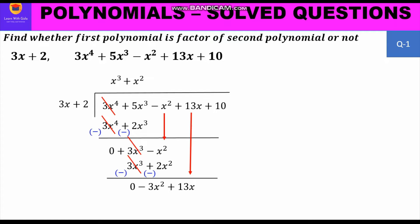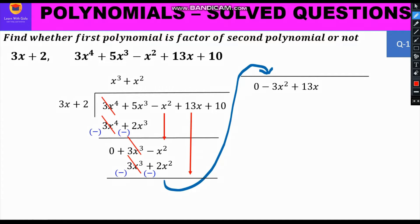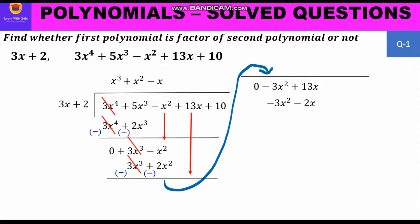We bring down 13x, giving a new dividend of -3x² + 13x. For division: -3x² divided by 3x gives -x, which we write on top. Multiplying -x by each term of the divisor: -x × 3x = -3x² and -x × 2 = -2x. After changing signs: -3x² becomes +3x² and -2x becomes +2x. Then -3x² and +3x² cancel, and 13x + 2x = 15x.